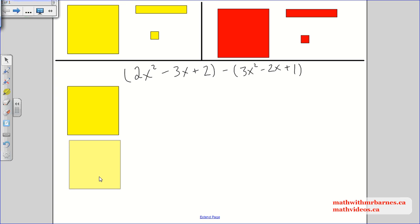So I got 2x squared, then I'm going to have negative 3x. As always, yellow is positive, red is negative, and then positive 2. This is my first algebra tiles.